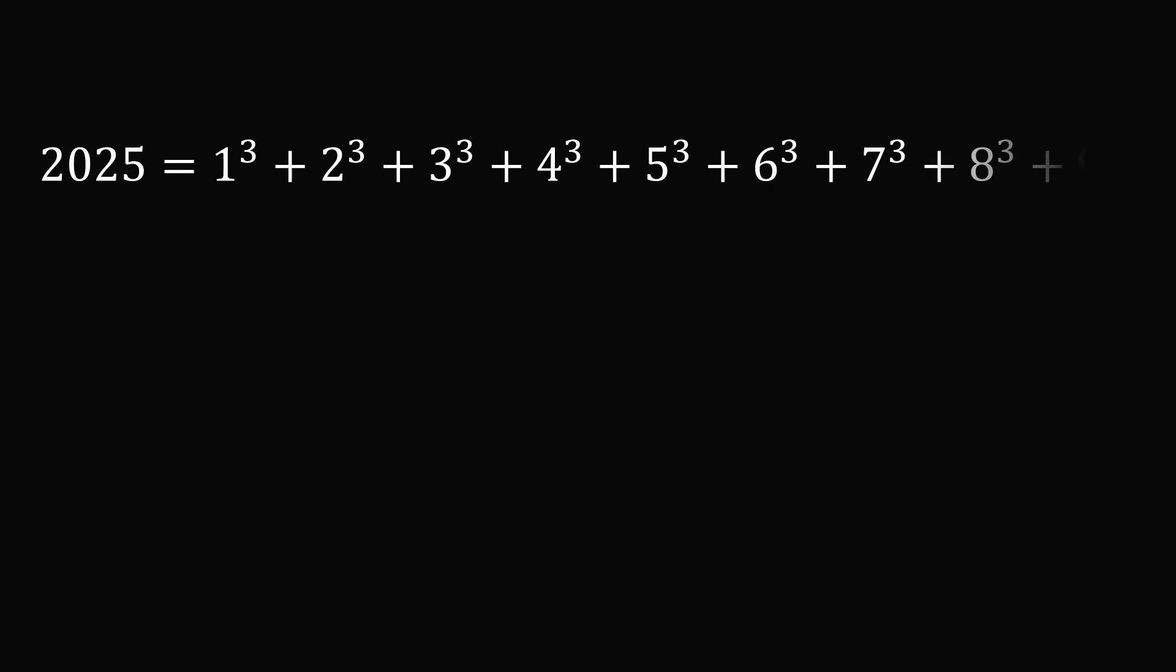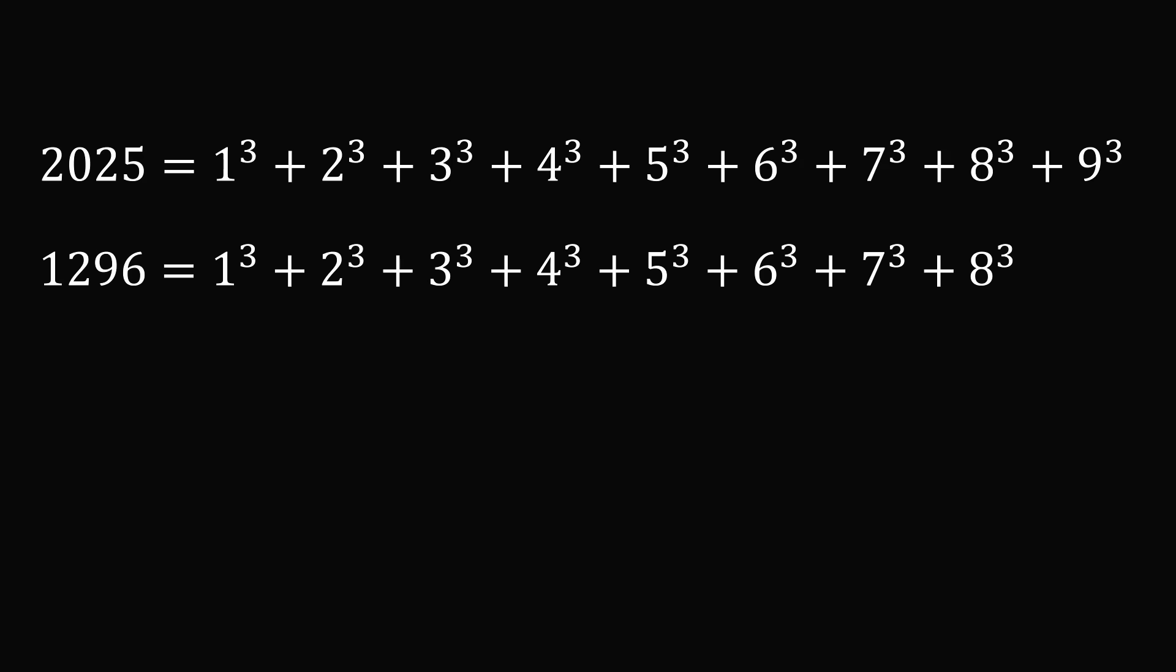Fact 3. 2025 is equal to the sum of the first nine cubes: 1³ + 2³ + 3³ + 4³ + 5³ + 6³ + 7³ + 8³ + 9³. The last year that could have this property would go up to 8 cubed, and that would be the year 1296.